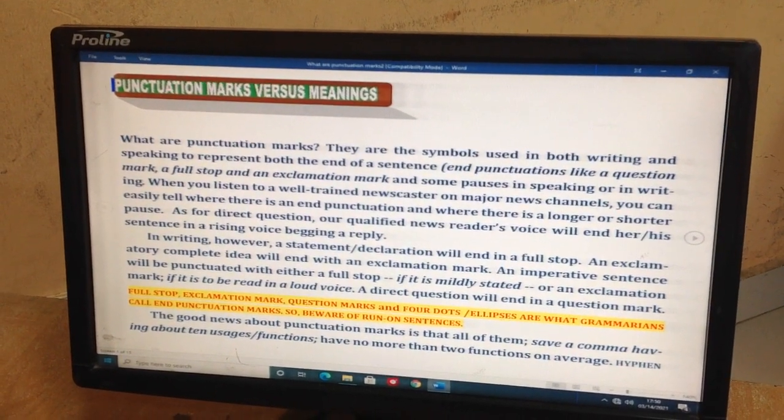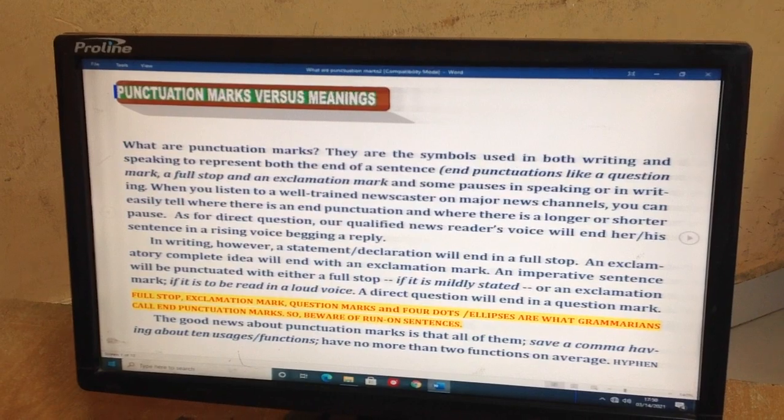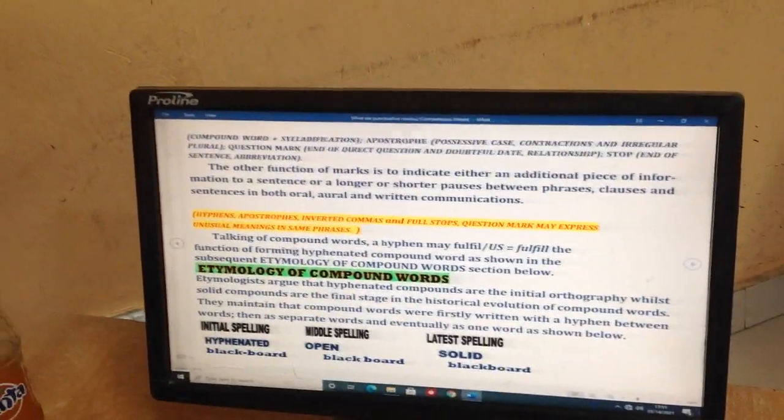We are talking about how punctuation marks can affect the meanings of words and phrases and even sentences in English. Of these 12 or so punctuation marks, we have chosen only five to talk about how they affect the meanings. We have already explained the reason.